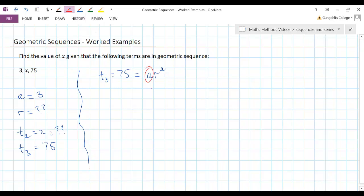Well I know what my a term is, my a term is 3, so let's put that into this equation, 75 is equal to 3r squared.